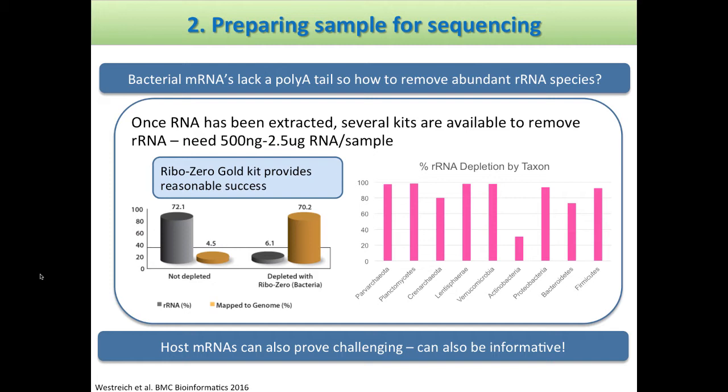A couple of years later we tried the first-generation Ribo-Zero kit and were able to increase that to about 50% messenger RNAs and 50% ribosomal RNA. With the latest generation — the data from those 16 different mice — we ended up with about 70 or 80% messenger RNAs. The kits are improving and doing a pretty good job of removing these abundant ribosomal RNA species.